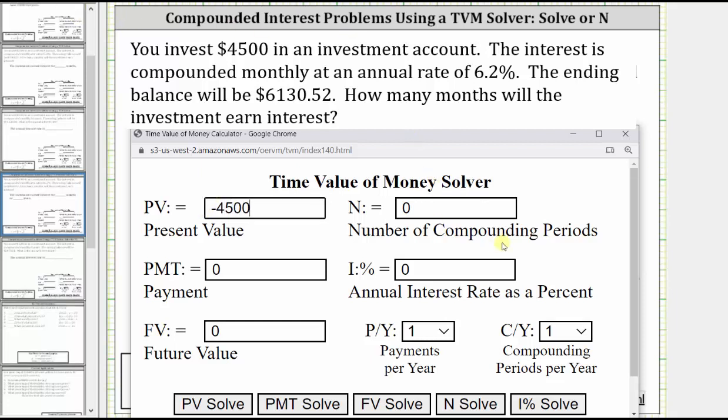Capital N is the number of compounding periods, which we were actually trying to solve for. This will tell us how many months it will take to reach the desired balance of $6,130.52.